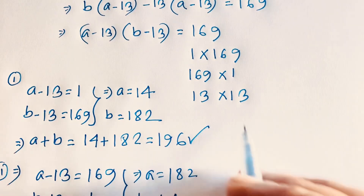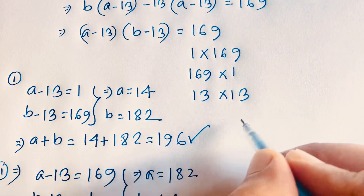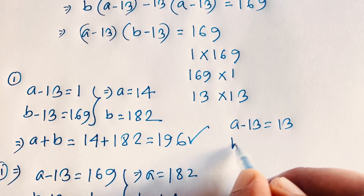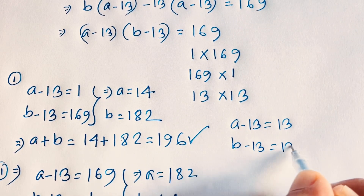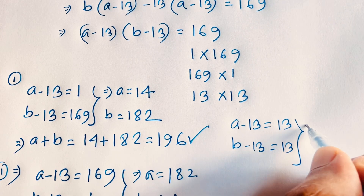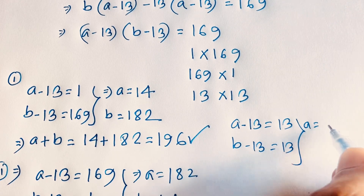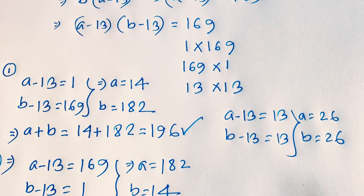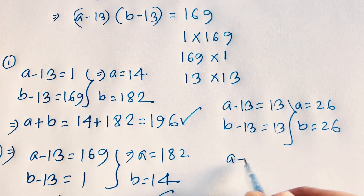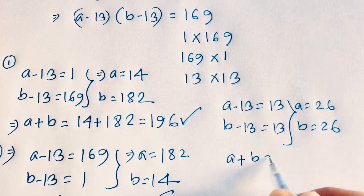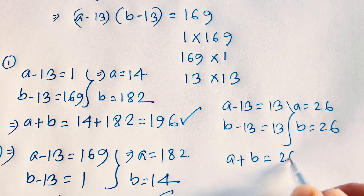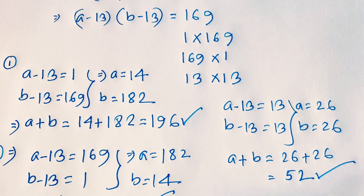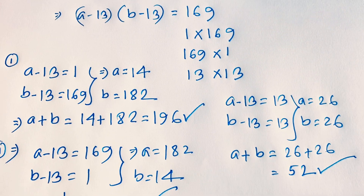Case 3: a minus 13 equals 13 and b minus 13 equals 13. So a equals 26 and b equals 26. Adding: a plus b equals 26 plus 26 equals 52. This is our final answer for case 3.